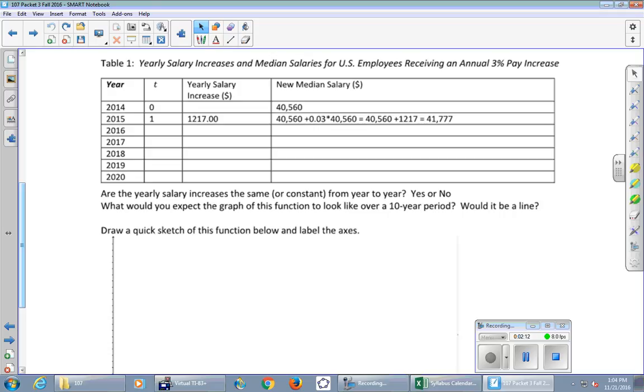Point oh three times the forty thousand five sixty. And if you take your twelve hundred seventeen dollar raise and you add it to your salary, you get your new salary, forty one seven seven seven. And so then the very next line, I need to take forty one seven seven seven and take three percent of it. So if I multiply that by point oh three, anybody have the number for me?